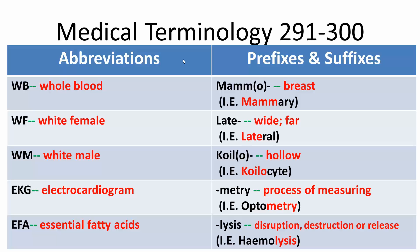In this video we will go over 10 medical terminology words. 5 will cover abbreviations and 5 will cover prefixes and suffixes. The first abbreviation is WB,